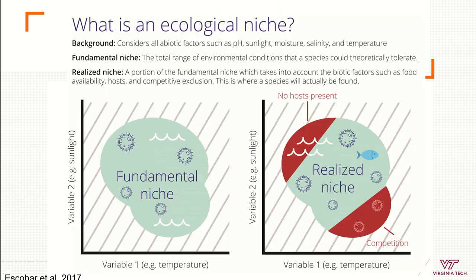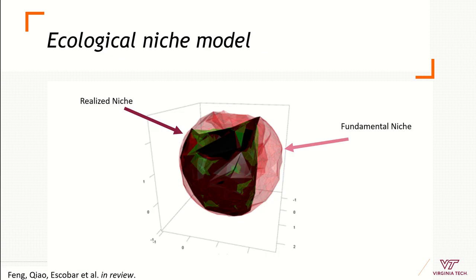We can classify niches differently. There is the fundamental niche — in theory, all the conditions that my species can tolerate — and the realized niche, which are the conditions that my species is actually using. In red are areas where my tick cannot be found, maybe because it cannot reach those areas, or there are predators, or there are no hosts. In blue I see the conditions this species is actually using — maybe not everything suitable, but what is available.